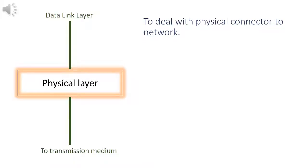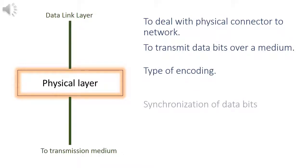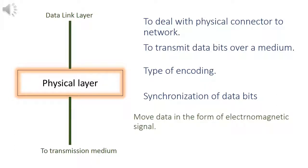Physical layer deals with physical connector to network, transmits data bits over a medium, ensures which type of encoding took place, and ensures synchronization of data bits. After that, data is sent to receiver system through a transmission medium.